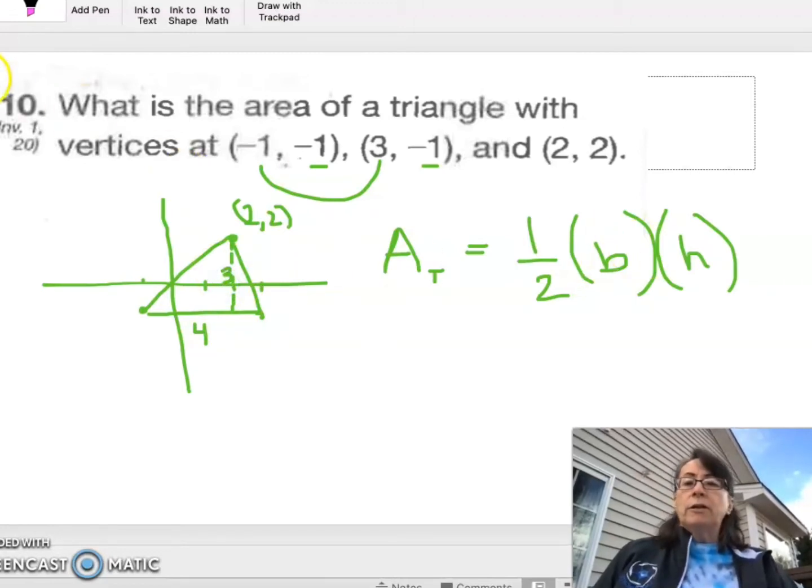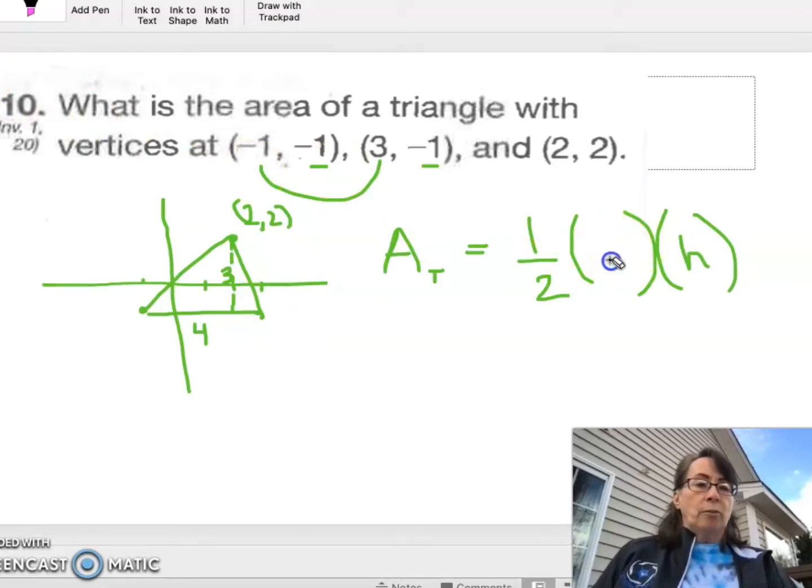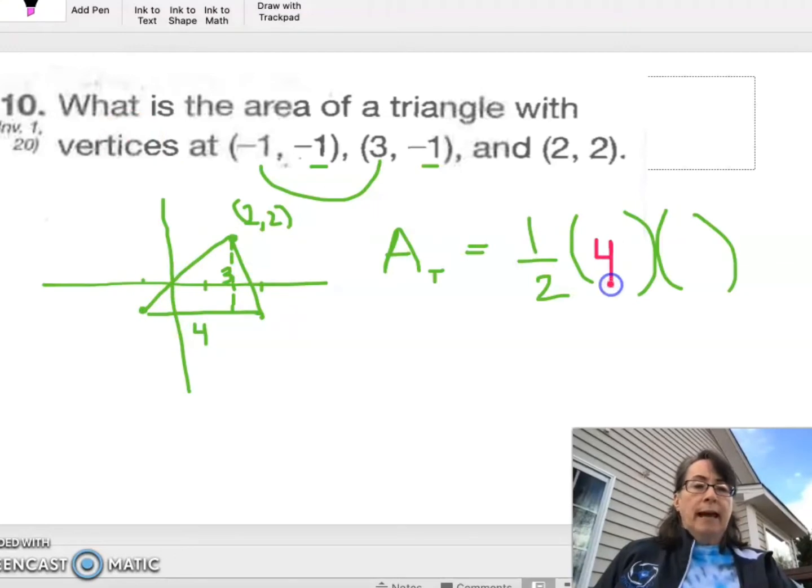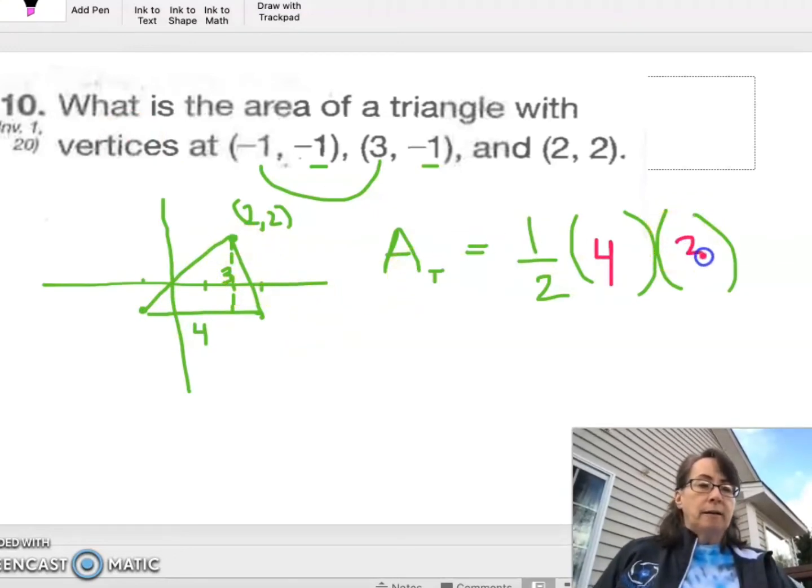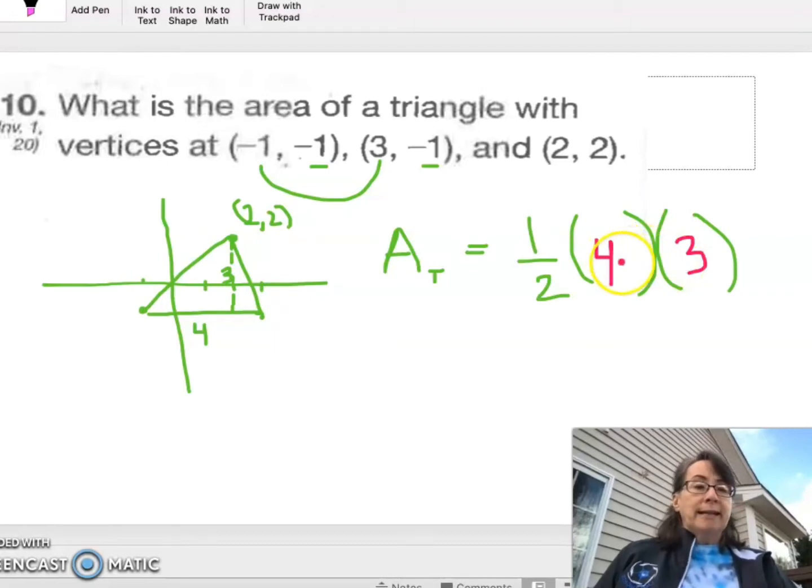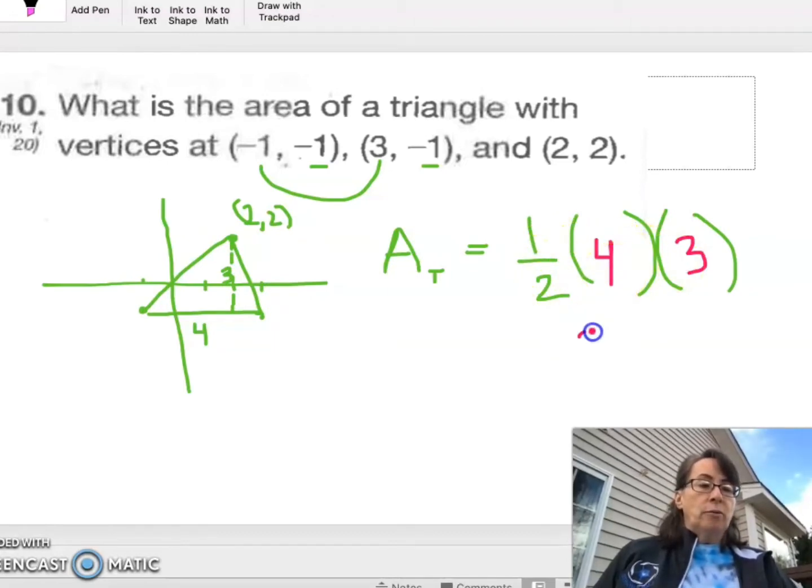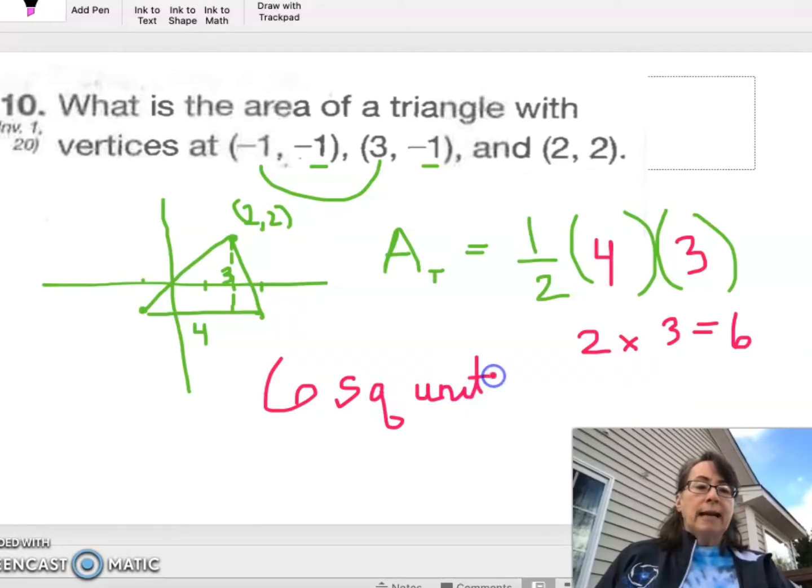So base of 4 and height of 3. The area: 1 half of 4 is 2 and 2 times 3 is 6. Now this is area, so it is in square units. So 6 square units would be our area. We do not just write 6 because it is area. It should be in square units.